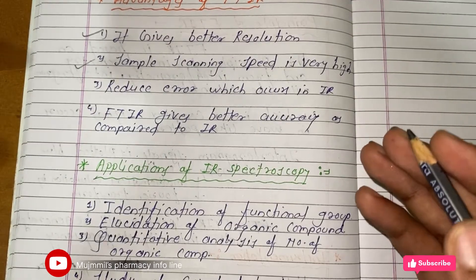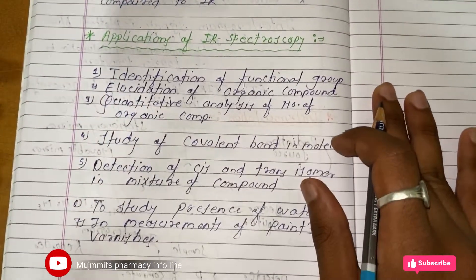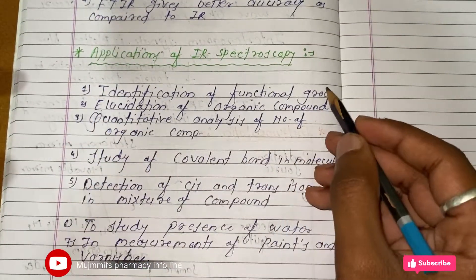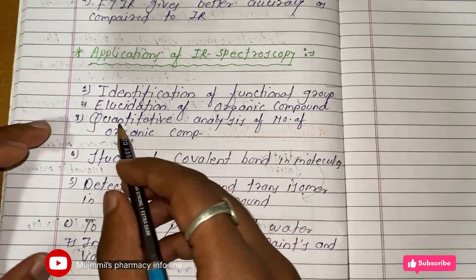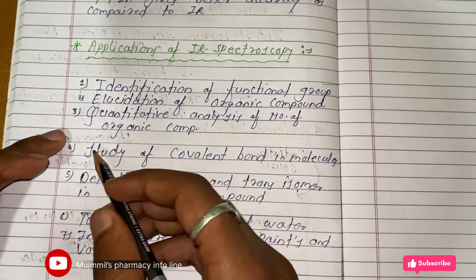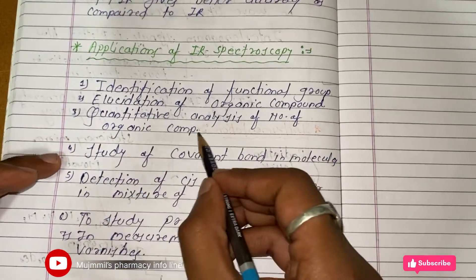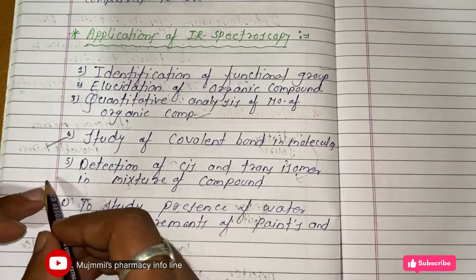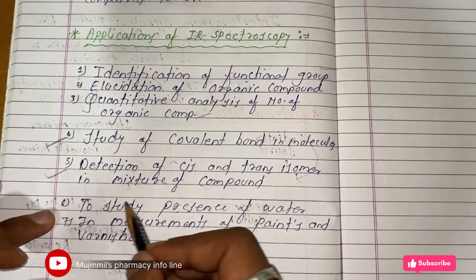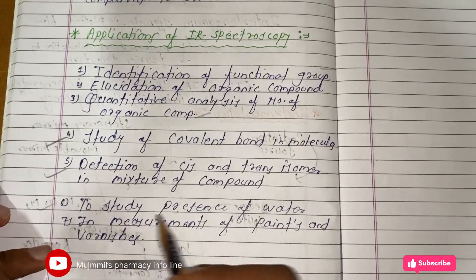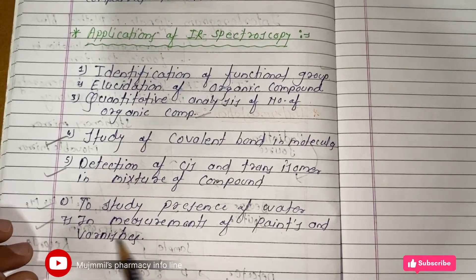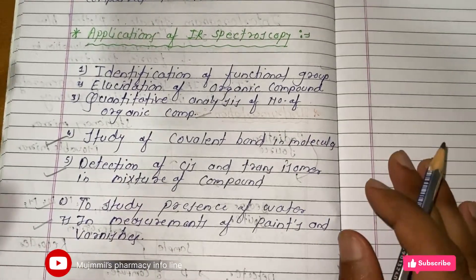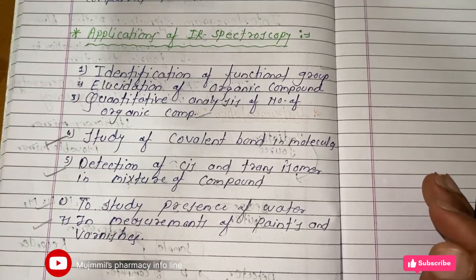Let's see the applications of IR spectroscopy: identification of functional groups, elucidation of organic compounds, quantitative analysis of organic compounds, study of covalent bonds in molecules, detection of cis and trans isomers in mixtures, study of the presence of water, and measurement of paints and varnishes.